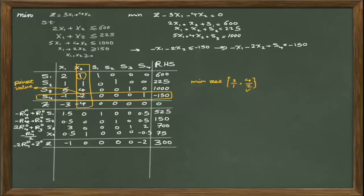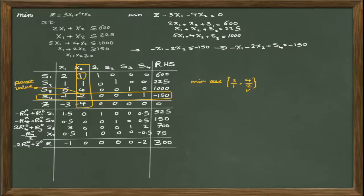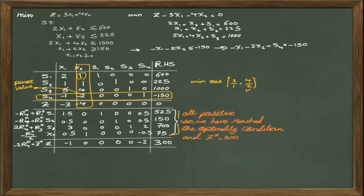We continue the dual simplex method by checking for the most negative value in the right hand side. As you see, there is no negative value in the right hand side and the optimality condition still holds. So we are at a feasible and optimal solution — this is the final simplex table. If there had been negative values in the right hand side, we would continue selecting the most negative value, implementing the minimum test, and updating the table. Since all values are positive, we have reached the optimal solution with z equal to 300. We moved from an optimal but infeasible solution to one that is both feasible and optimal. Our lesson on the dual simplex method has concluded.